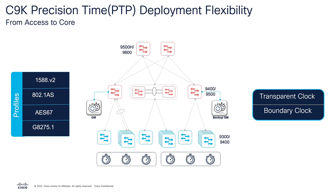Precision time protocol is supported in Stackwise deployments with Catalyst 9300 platforms, where you can stack up to 8 switches for a single control and management plane along with distributed forwarding. PTP is also supported in Stackwise Virtual deployments with Catalyst 9400, 9500, and 9600, where you can combine two switches for a single control and management plane with distributed forwarding.